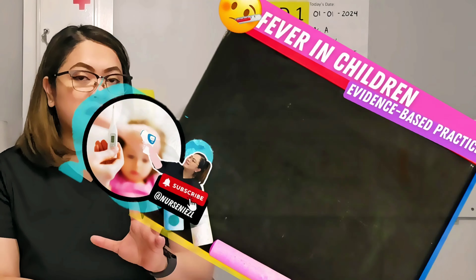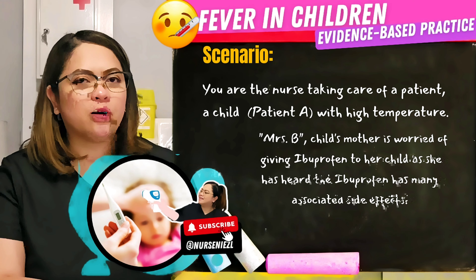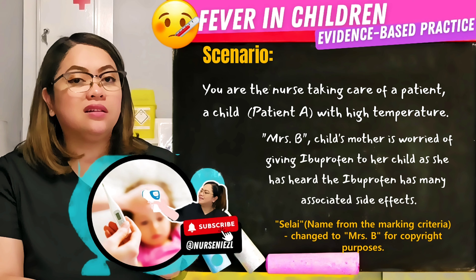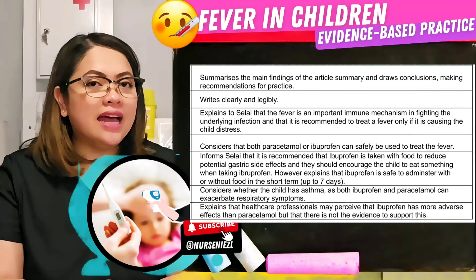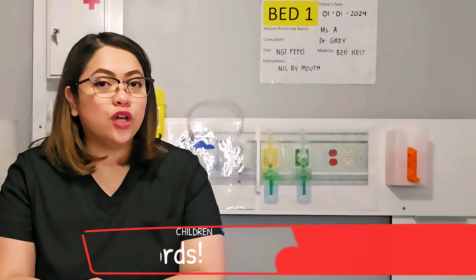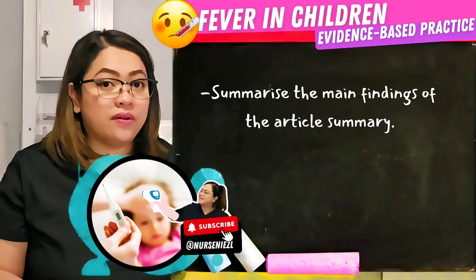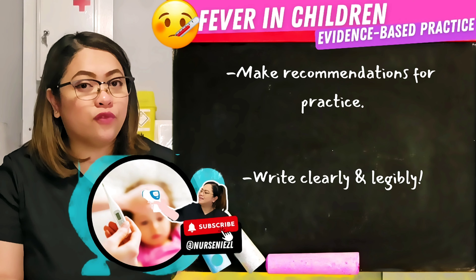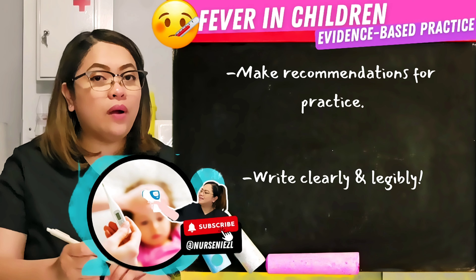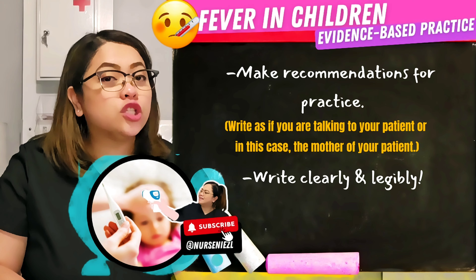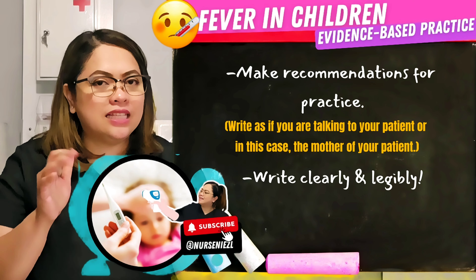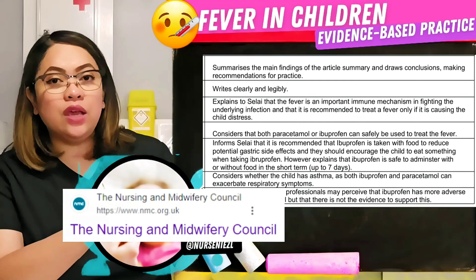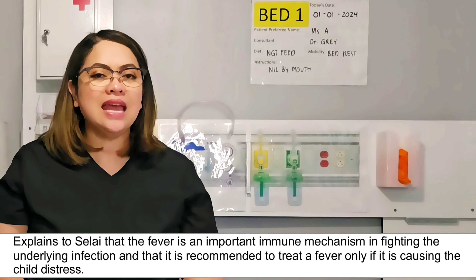You'll be given a scenario that revolves around this scene, and that's according to the marking criteria. You're going to receive a lengthy piece of research that you have to read through — make sure you understand what you are reading. You've got the marking criteria on which you'll base your answer, and I'm going to help you highlight the keywords. Let's start with the first one from the marking criteria: you have to summarize the main findings of the article, draw a conclusion, and make recommendations for practice.